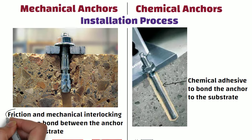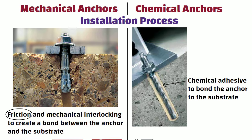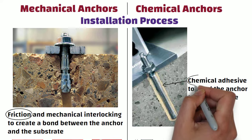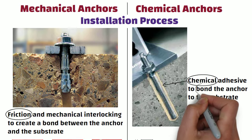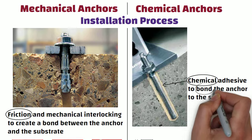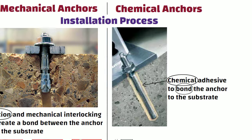Mechanical anchors work by using friction to hold an object in place, whereas chemical anchors rely on a chemical bond between the anchor and the surface to create a secure attachment.